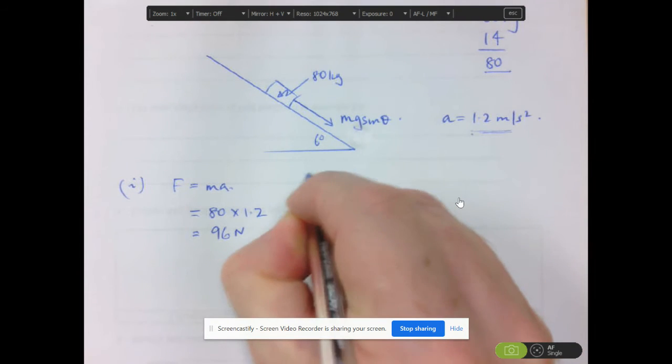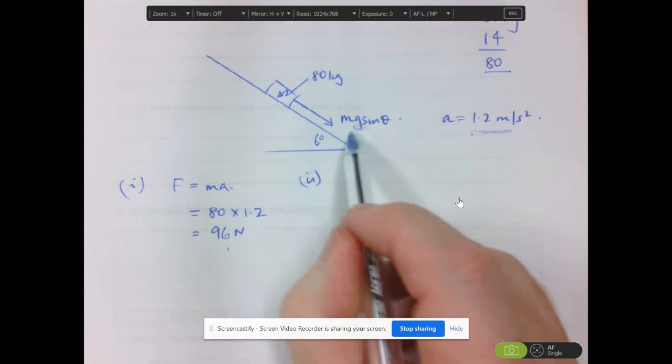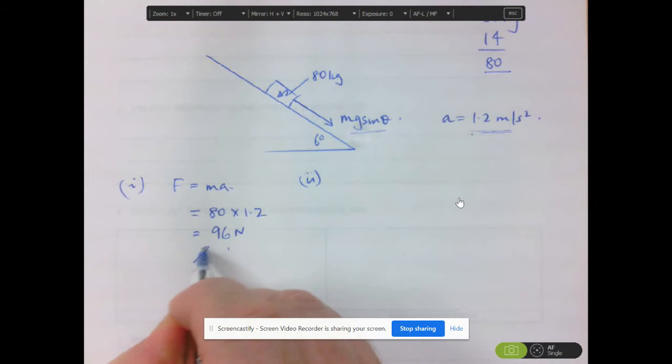Number two, how much of this acceleration is due to this weight force here? So this force here is made up of two things. It's the weight component, that's what's pulling him down because of gravity, plus his pedaling.